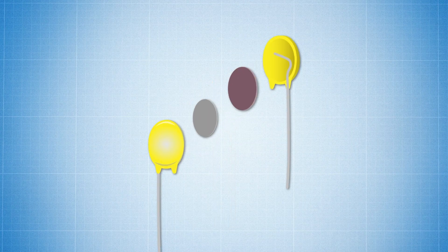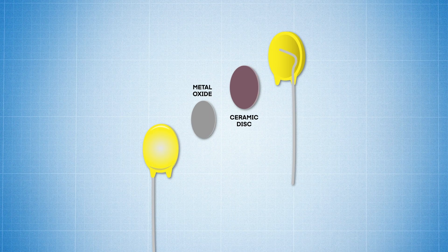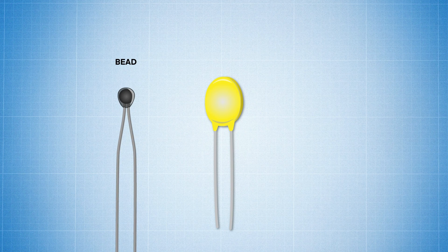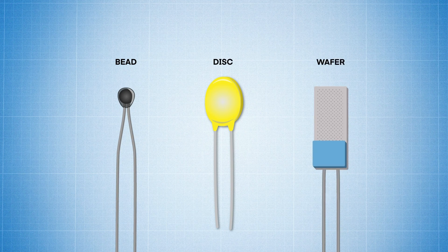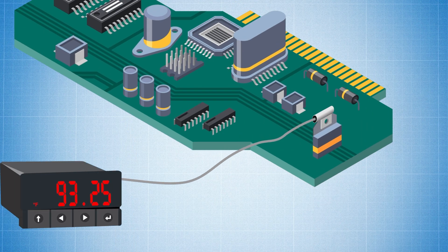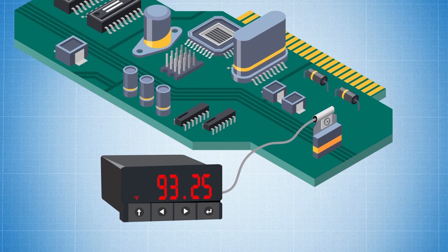Thermistors consist of a metal oxide semiconductor pressed into a small bead, disc, or wafer that's coated with epoxy or glass. And since thermistors are constructed of semiconductor materials, they provide the best sensitivity of any measurement device and are ideal for measuring smaller temperature changes.